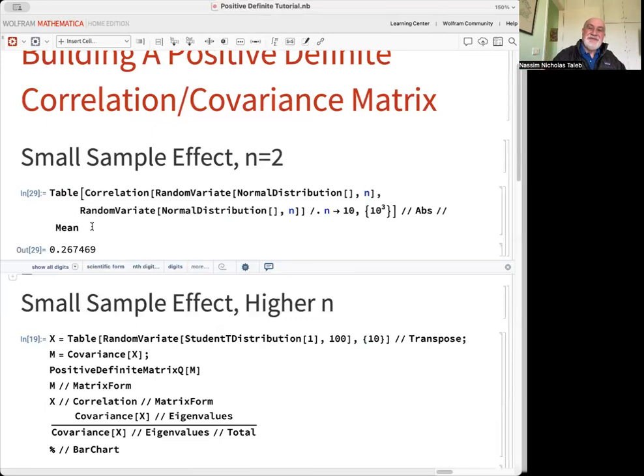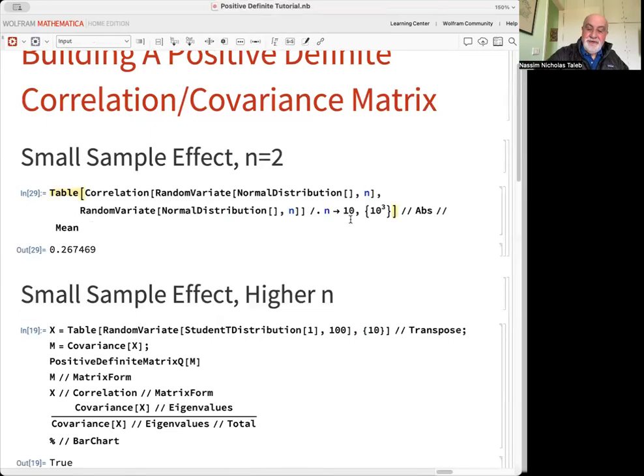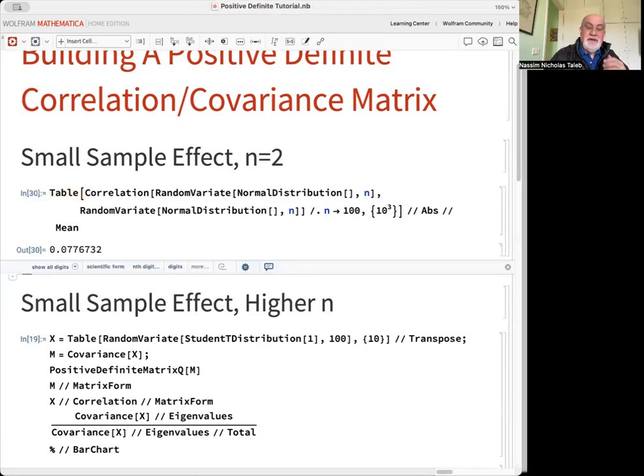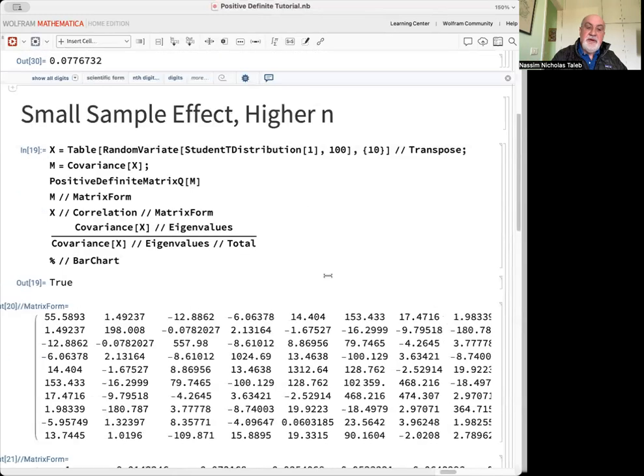In expectation, we're going to get a high number with 10. When you move to 100, it's going to be much smaller. If you go to infinity, it's going to be zero. So that small sample effect can work for us.